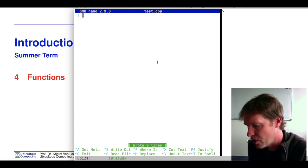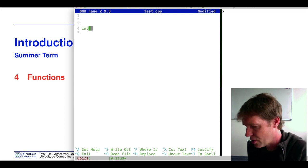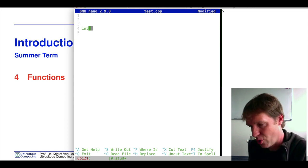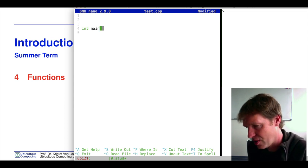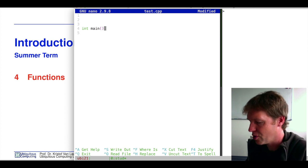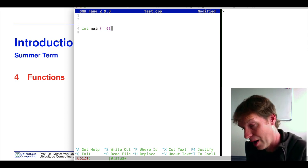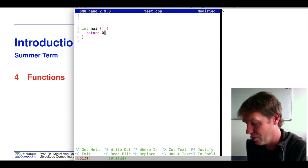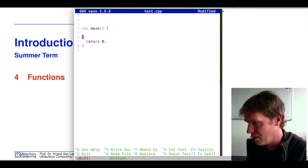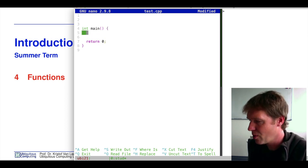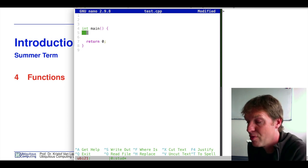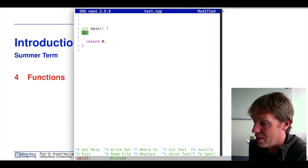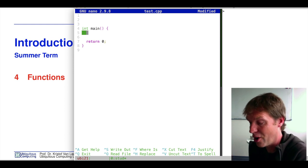We know that when we start using certain keywords like int for integer, this is a return type of a function main that doesn't take any parameters or arguments and has a certain body. The main function is the function that is always executed when you start up this executable.